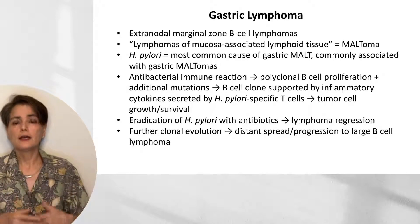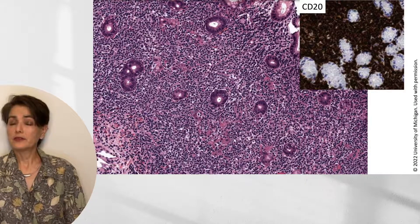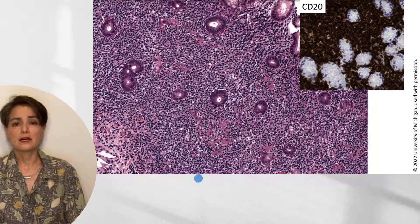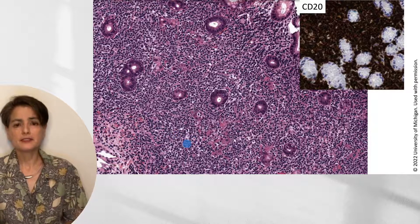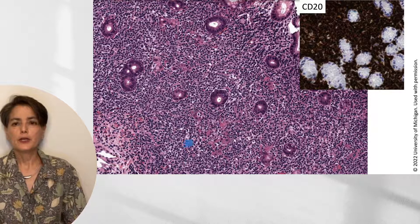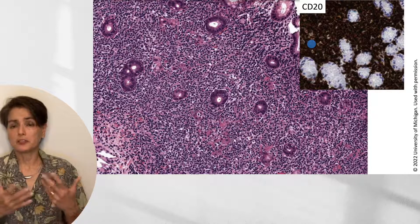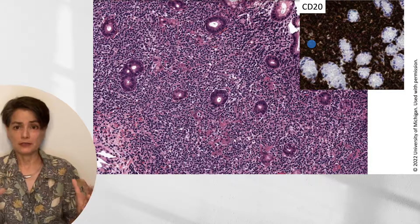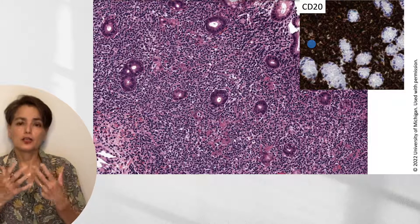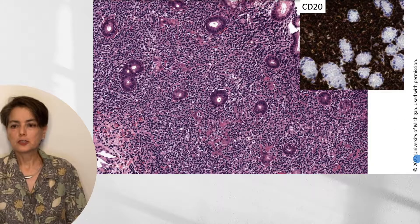One B-cell clone can be supported by inflammatory cytokines secreted by H. pylori-specific T-cells, driving that clone's growth and survival — shifting from polyclonal to oligoclonal B-cell proliferation. If H. pylori is diagnosed and treated at this point, you can actually achieve lymphoma regression. If untreated, further clonal evolution can lead to distant spread and progression to large B-cell lymphoma. Histologically, sheets of atypical lymphocytes push apart the glandular tissue. Immunohistochemical staining for CD20, a B-cell marker, confirms these are all B-cells — not a mixed inflammatory infiltrate, but a clonal B-cell population.